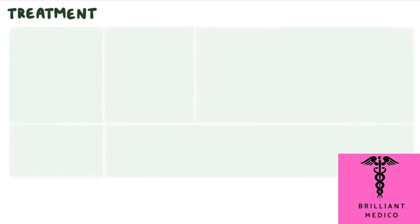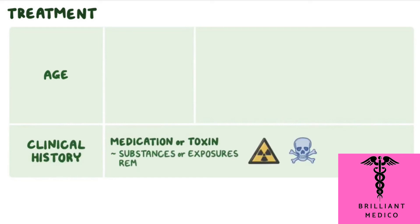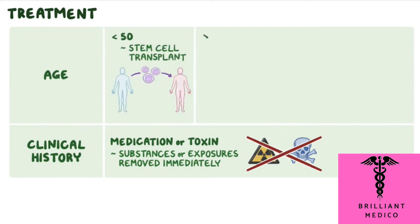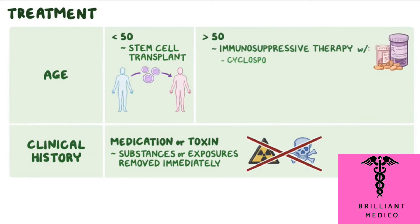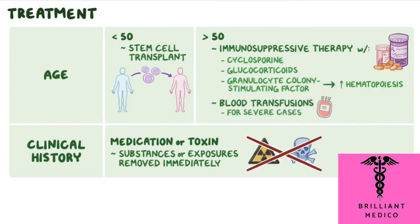Treatment of aplastic anemia is largely dependent on the age of the person affected, as well as the clinical history. If the condition is thought to be due to a medication or toxin, these substances or exposures should be removed immediately. For people under the age of 50, first-line therapy is a stem cell transplant. For those greater than age 50, first-line therapy is immunosuppressive therapy, with medications like cyclosporin or glucocorticoids, as well as medications that help to stimulate increased hematopoiesis, like granulocyte colony stimulating factor. Blood transfusions may be necessary for severe cases.